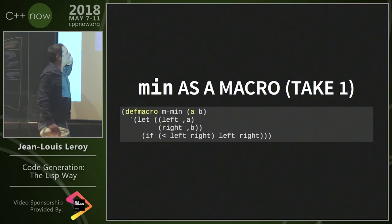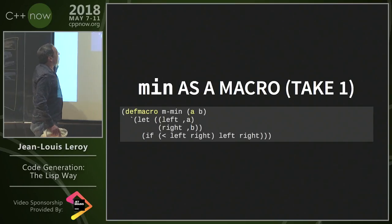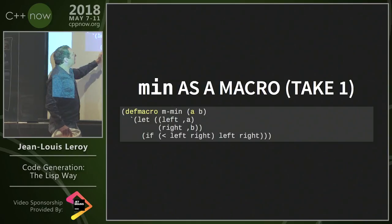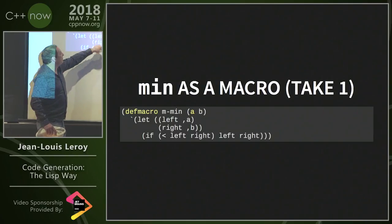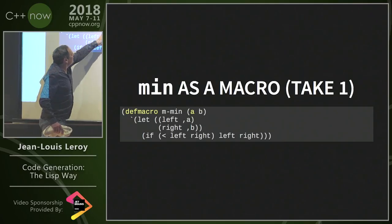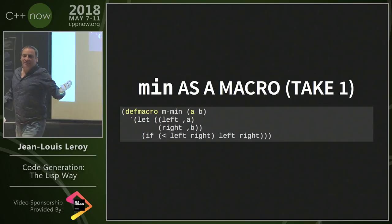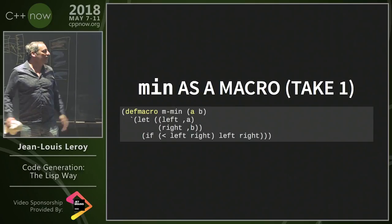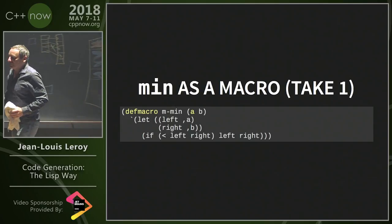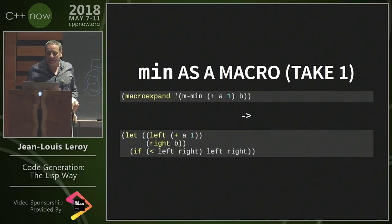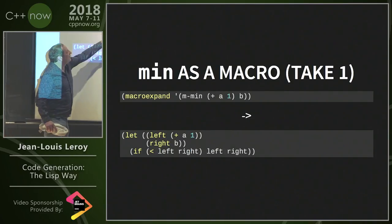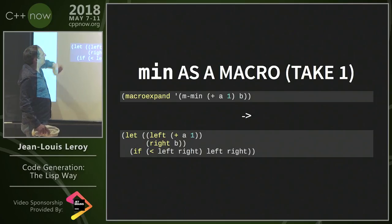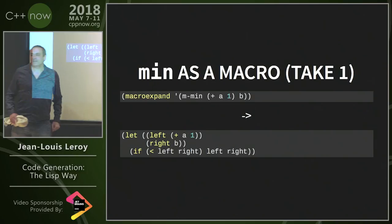With `defmacro`, this function executes at compile time. We simply build the program we want using the back-quote, and wherever we need to substitute A and B — which can be arbitrarily deep expressions — we inject them. It's very easy to write. With Emacs Lisp, we can ask Lisp to expand the macro and see the result.